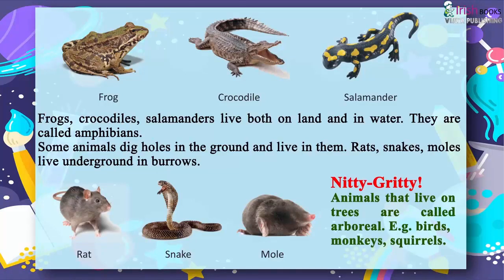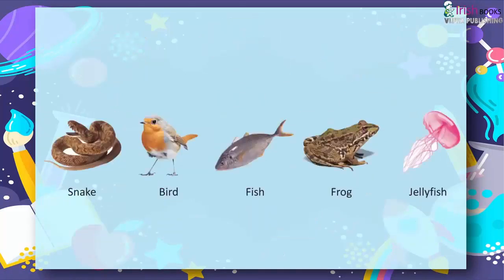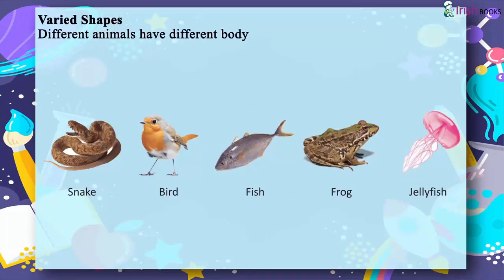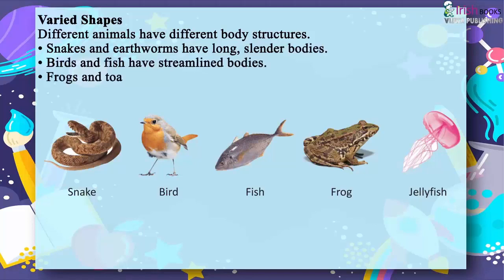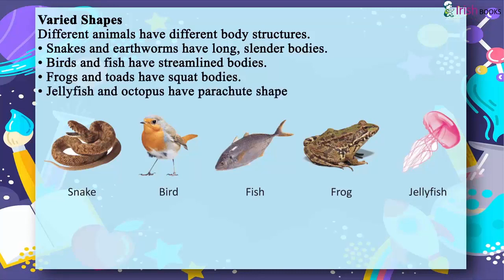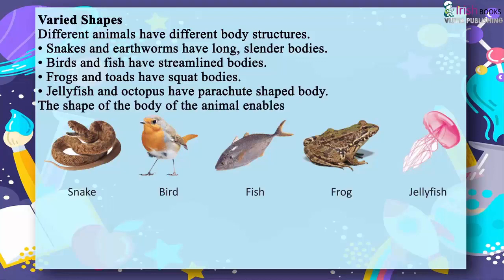Varied shapes. Different animals have different body structures. Snakes and earthworms have long, slender bodies. Birds and fish have streamlined bodies. Frogs and toads have squat bodies. Jellyfish and octopus have parachute-shaped bodies. The shape of the body enables the animal to live and move in its habitat.